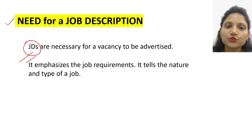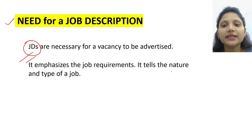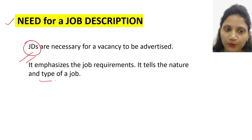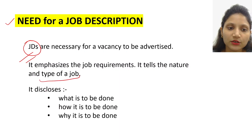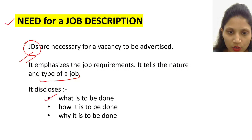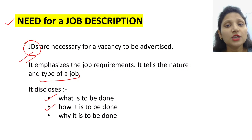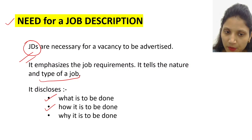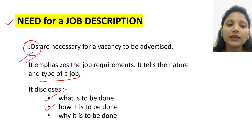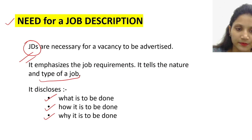Job description emphasizes the job requirements — ush job me kya kya requirements hain. It tells the nature and type of job. It basically discloses: what is to be done — kya kya karna hai us job pe; how it is to be done — kya kya tools, machineries, equipment, softwares use kiye jayenge is job ko karne ke liye; and why it is to be done — kya objective hai is job ko karne ke peeche. Woh bhi mention karna hai apne job description me.